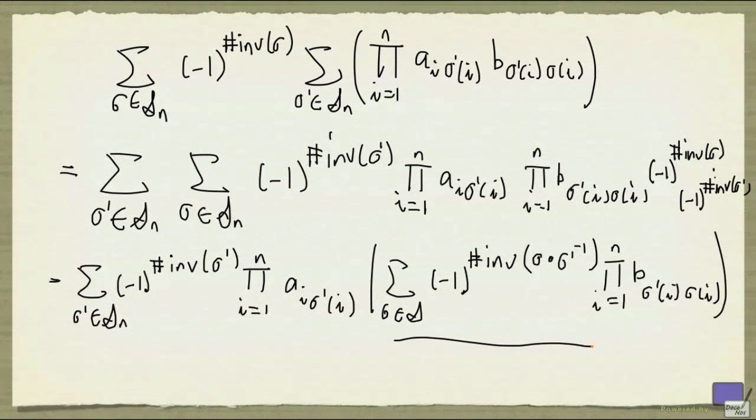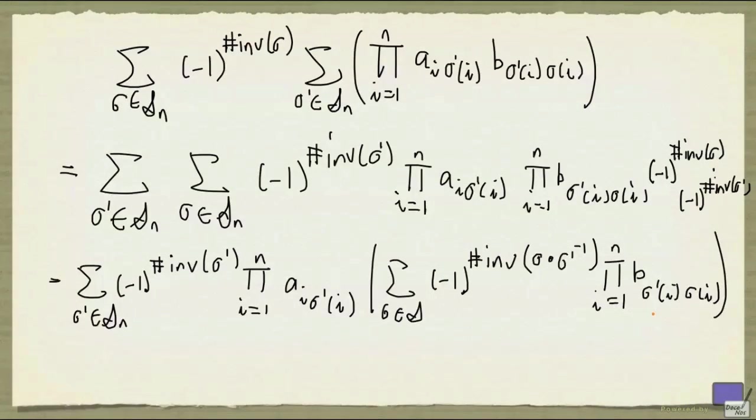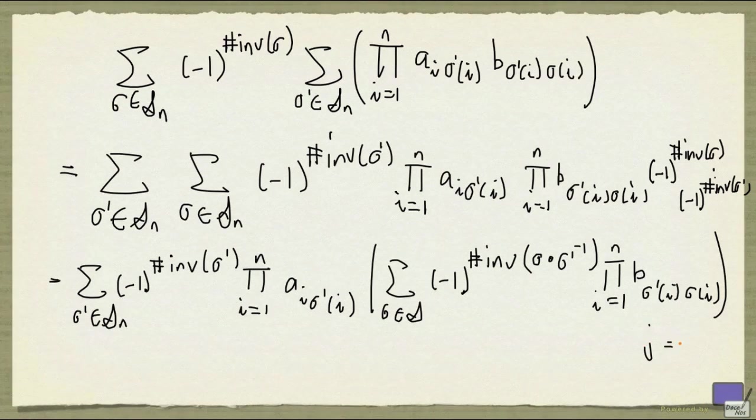But now, let's focus on this thing. As i ranges from 1 to n, sigma prime of i ranges from 1 to n as well, but not necessarily in that order, whereas sigma i goes through all possible n values as well. If you change the index a little bit, so I'm going to let j to be sigma prime of i, that means i becomes the sigma inverse of j.